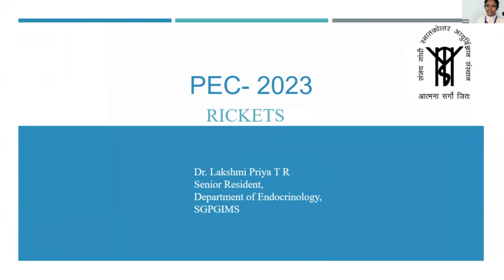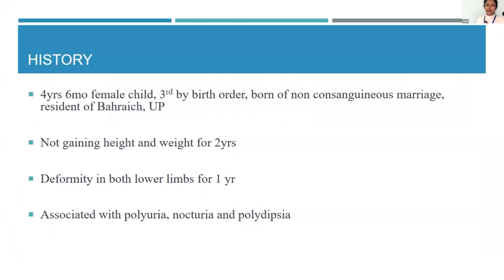The next case is a young child with deformities. This child presented at four and a half years of age. She was born third by birth order of a non-consanguineous marriage and had a history of poor height and weight gain for the earlier two years, as well as a history of deformity in both lower limbs noticed one year ago.